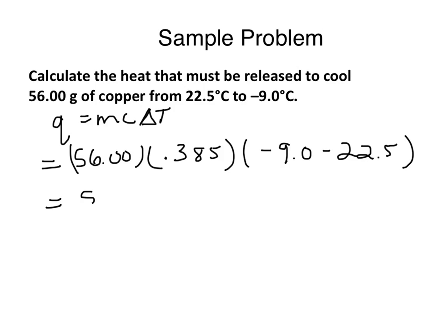Okay, so 56 times 0.385 times the difference here of negative 31.5 degrees Celsius. When we round our answer, we're not going to use the specific heat capacity for sig figs. We're just going to use the data. So, the 56 or the negative 31.5. And since we're multiplying, we're going to go with three sig figs. And we get negative 679.